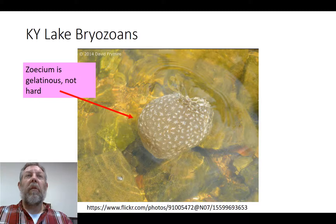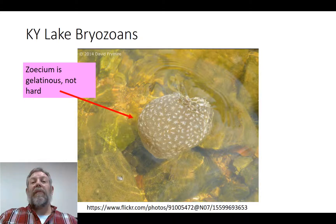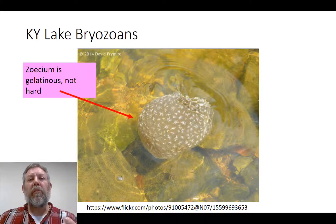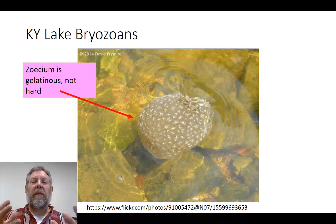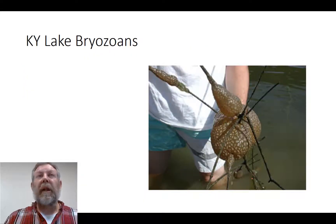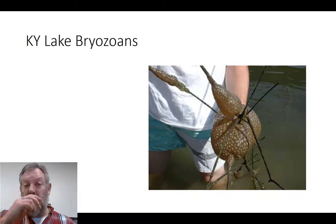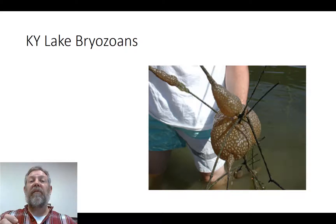Here's what one looks like in the wild — what you're going to find. You'll see these all over Kentucky Lake along the shoreline, growing on stick-ups and on docks. The zoecium secreted by the individuals is gelatinous — it's a really interesting texture. When it warms up, I'll go grab one and bring it in to show you. It's definitely not hard like coral, but it is secreted similarly. They grow attached to submerged sticks, and when the water level goes down you'll see them a lot. I'll have some specimens and videos of these for you later in the year.